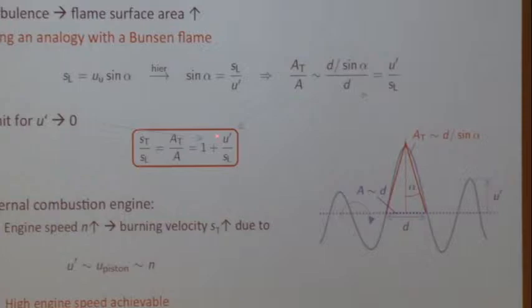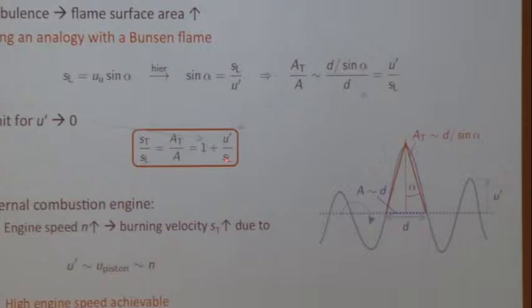This is interesting: S_T is proportional to U prime. We'll see later that the coefficient of proportionality is roughly equal to 2. This is actually quite accurate. It also explains why piston engines work across a wide speed range — U prime is proportional to piston speed, so when the piston moves faster, the flame automatically burns faster.